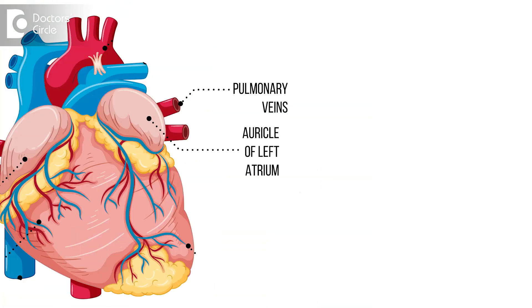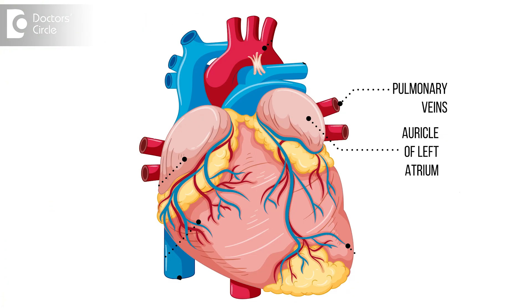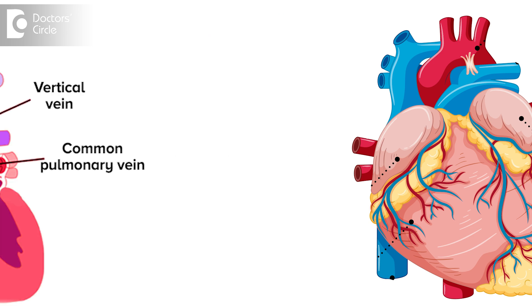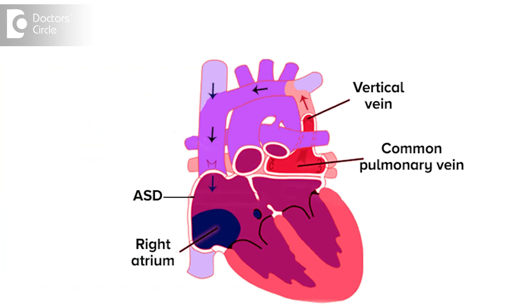TAPVC is Total Anomalous Pulmonary Venous Connection — that means it is a congenital heart defect where the pulmonary veins are supposed to enter the left atrium, but instead enter into the right. All four pulmonary veins enter into the right.